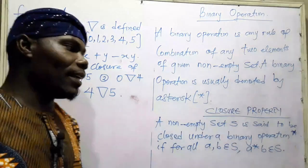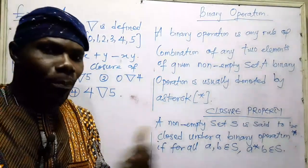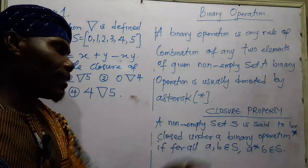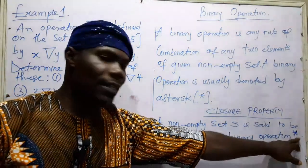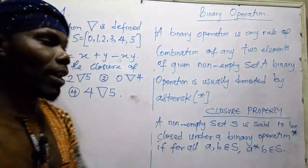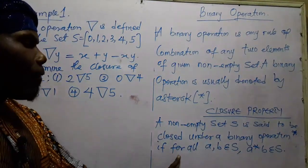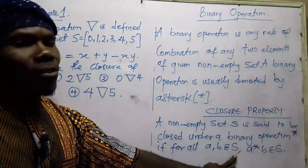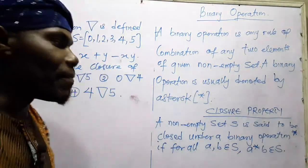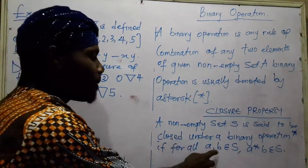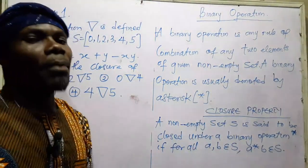The first property in binary operation we call the closed property. A non-empty set X is said to be closed under a binary operation — the asterisk symbol for the operation. If for A, B elements of X, A operation B must also be an element of X before we can say that A and B is closed under X. That is the meaning of the closed property.